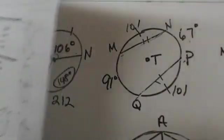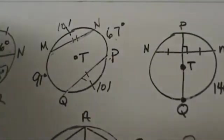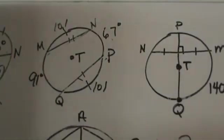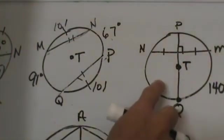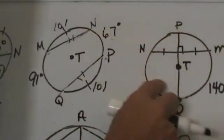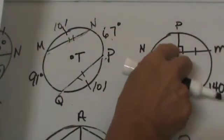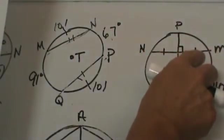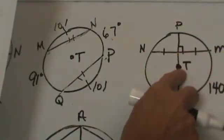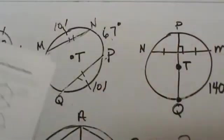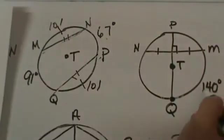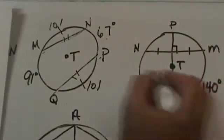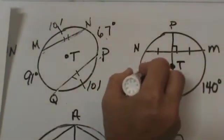Now let's look at number 21. We have a circle with perpendicular lines and two congruent chords, which means T is the center. It is pretty easy from here — everything is symmetrical. If you folded this in half it would all match up. That gives us 140° and 140°.